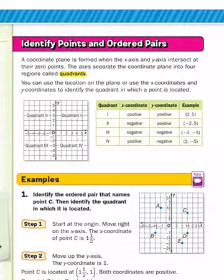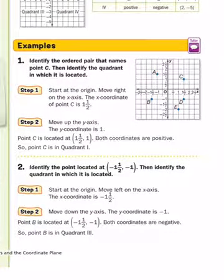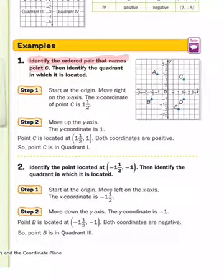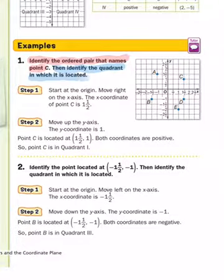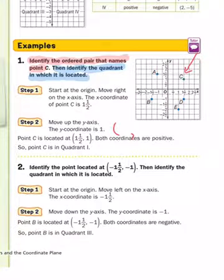Let's take a look at the type of things you need to do. In example 1, it's going to ask you to do two things. It says identify the ordered pair that names point C, and then identify the quadrant in which it is located. Let's start out with the first part — identify the ordered pair that names point C. So point C is right here, and the ordered pair is the pair of numbers that identify where it is.